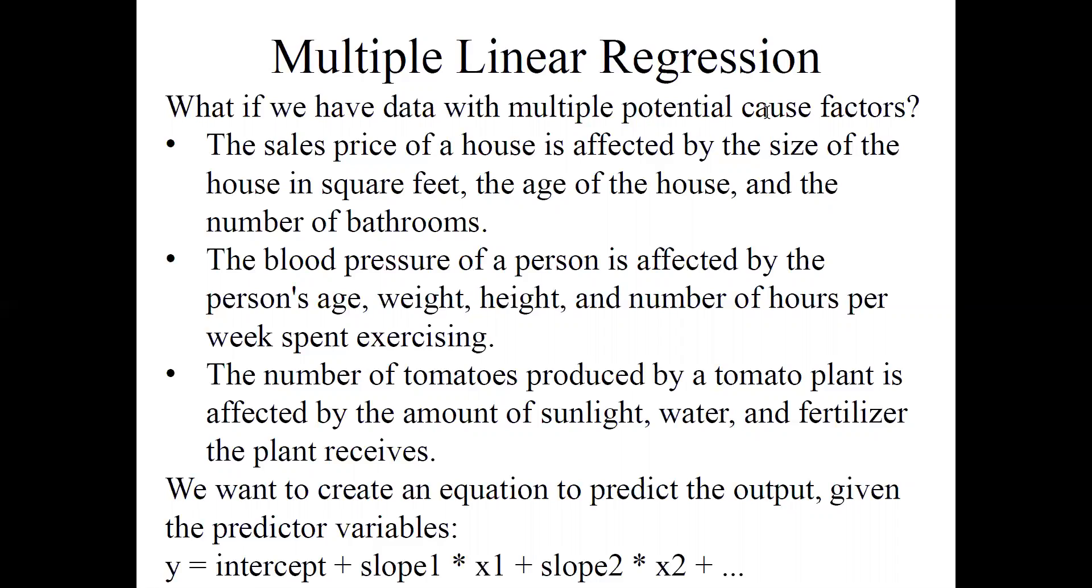The number of tomatoes produced by a tomato plant is affected by lots of factors like the amount of sunlight and water and fertilizer the plant receives. In this case, we want to take our data and create an equation to predict the output, the response variable, given several predictor variables.